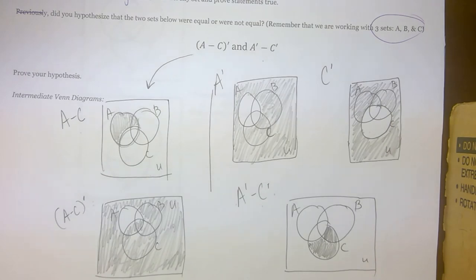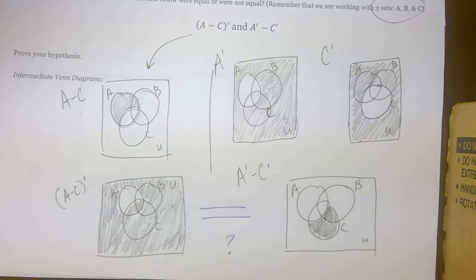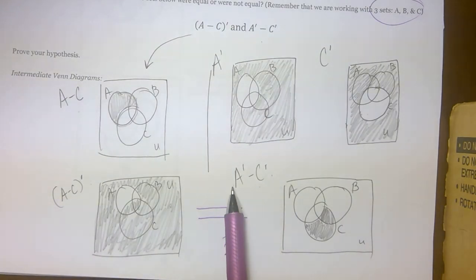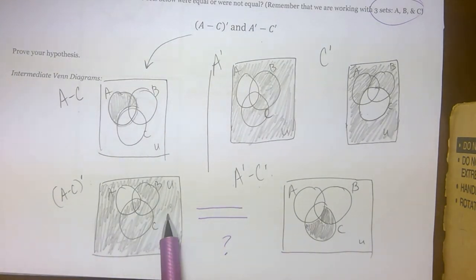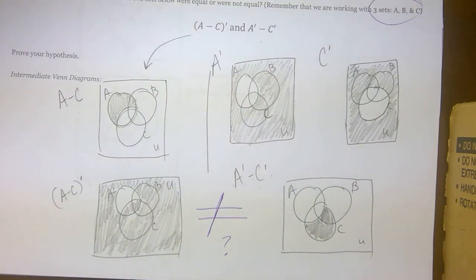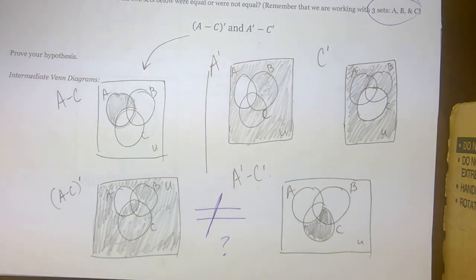Now I compare: is (A minus C) complement the same as A prime minus C prime? Obviously not — I've got six regions shaded in one and only two regions shaded in the other. So they are not equal. We have proved through deductive reasoning — using general Venn diagrams — that these two sets are not equal to each other.